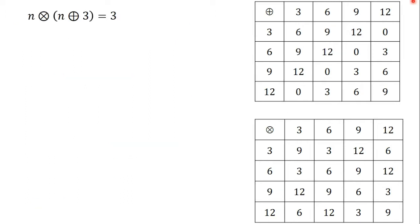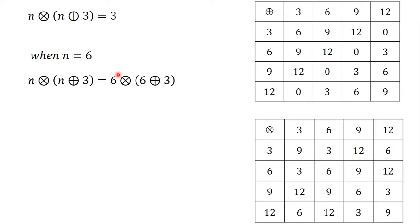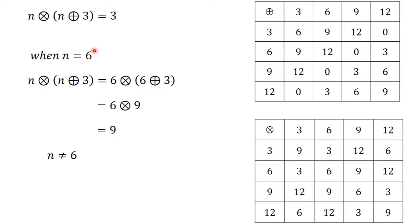The next one is when n equals 6. When n equals 6, n times (n plus 3) becomes 6 times (6 plus 3). From the addition table, 6 plus 3 gives us 9. So we have 6 times 9. From the multiplication table, 6 times 9 gives us 9. But from our equation, n times (n plus 3) should give us 3. Since 6 times (6 plus 3) gives us 9, n equals 6 will not satisfy the equation.